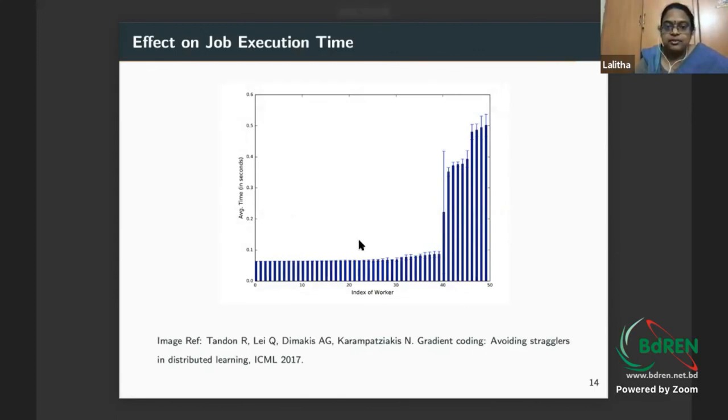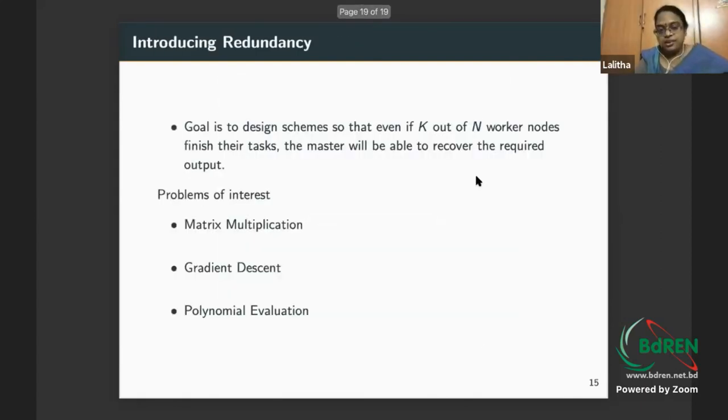A fraction of workers will be very slow in general, forming a bottleneck for job execution times. The solution is introducing redundancy. One way is just to replicate, but wherever there's replication, there's a better way. Coding has been used for distributed matrix multiplication, gradient descent, polynomial evaluations, etc. This is very recent work. There are many award-winning papers in information theory society and it has gone all the way to practice.